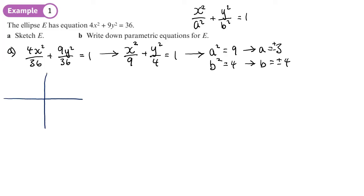Now we can do our sketch. Trying to do it to some sort of scale: 3 and minus 3 on the x-axis, and 2 and minus 2 on the y-axis. So we have an ellipse stretched out in the x-direction. A sketch just needs the right shape and the right place - you will get marks for getting it right. Notice that these ellipses are all going to be centred on the origin.